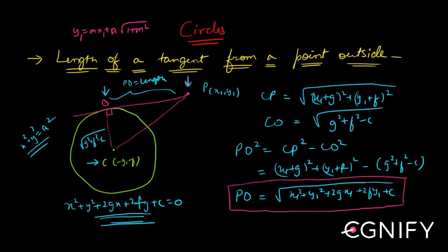And CP you can find out using the distance between two points form. So CP you can find out - you have two points, find out the distance between them. CO is basically your radius. By applying Pythagoras theorem, PO square should be equal to CP square minus CO square. This is your hypotenuse, right? CP is your hypotenuse.